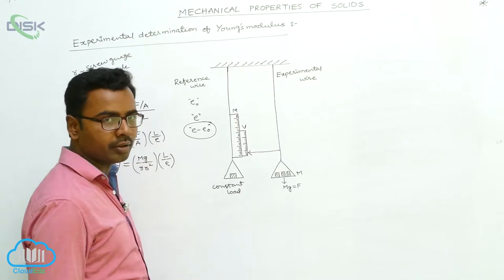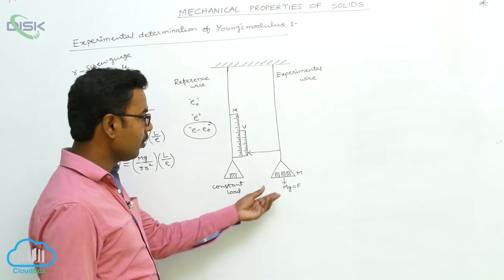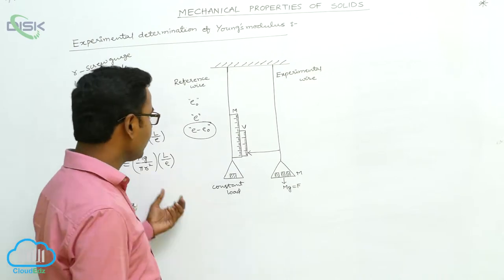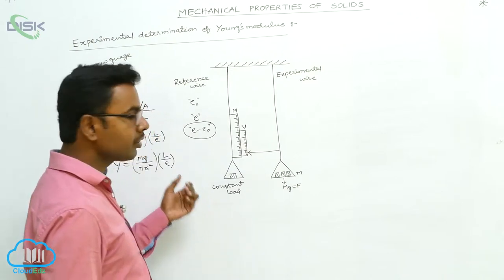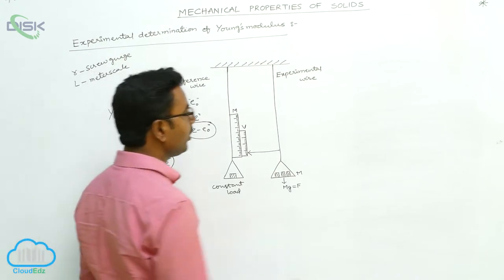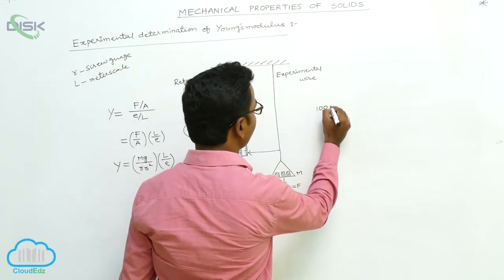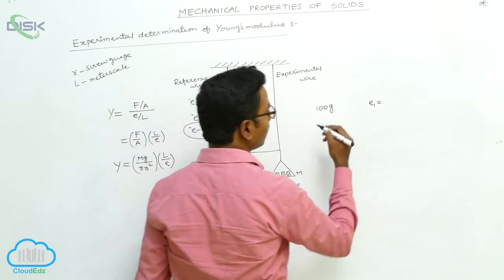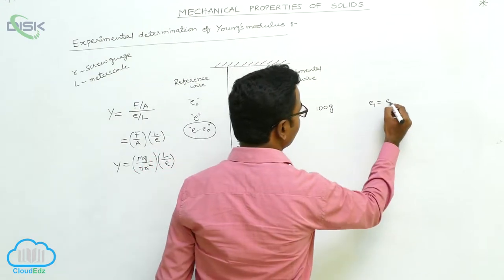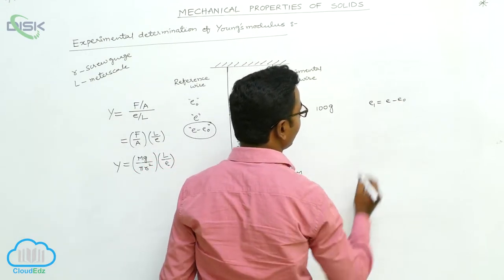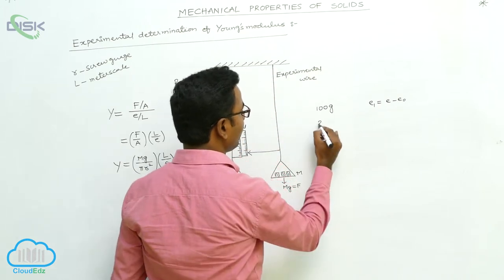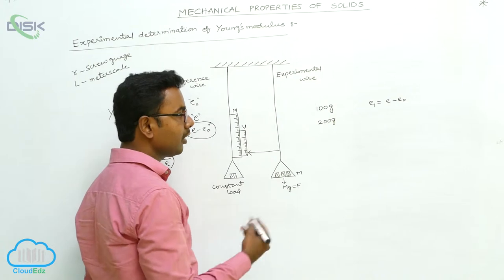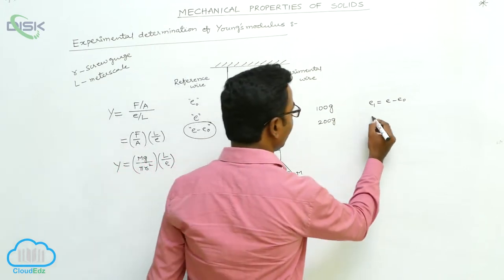The experiment can also be repeated for various loads placed in the pan of the experimental wire. Initially we find the elongation produced for 100 grams mass only. The elongation produced for 100 grams mass is E1, where E1 is found as E minus E0. Now when we place 200 grams by adding another 100 grams, the total elongation is supposed to be E2.